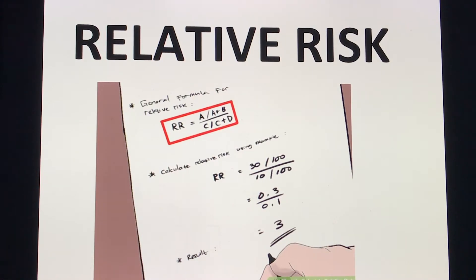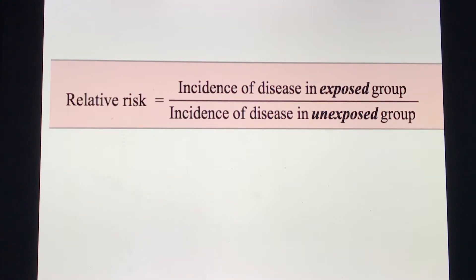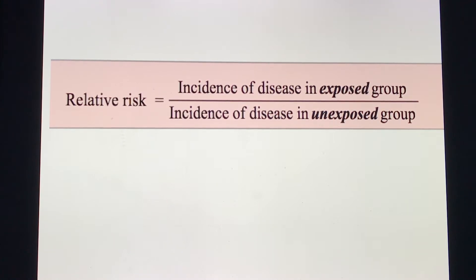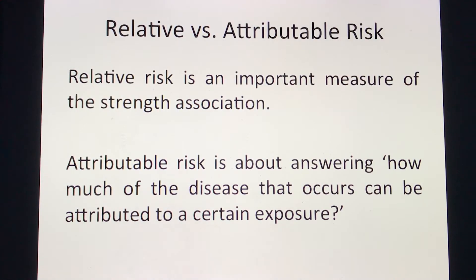Let's introduce the concept of relative risk. Relative risk is defined as the incidence of the disease in the exposed group divided by the incidence of the disease in the unexposed group. Relative risk is an important measure of the strength of association, while attributable risk answers the question: how much of the disease that occurs can be attributed to a certain exposure?